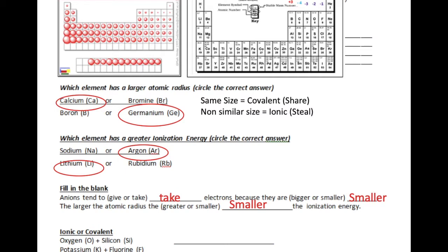Anions tend to take electrons because they are smaller. The larger the atomic radius, the smaller the ionization energy. When you're bonding two elements, you can decide if it's ionic or covalent by looking at trends on the periodic table. An ionic bond is usually two elements on very drastically different sides of the periodic table — not very similar in size or ionization energies. Covalent bonds share electrons and are usually the same size. For example, oxygen and silicon are in the same group, very similar in size, so it's covalent. Versus potassium and fluorine, on very opposite sides of the periodic table, giving us an ionic bond.